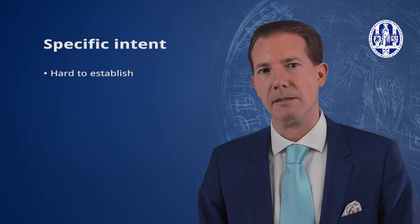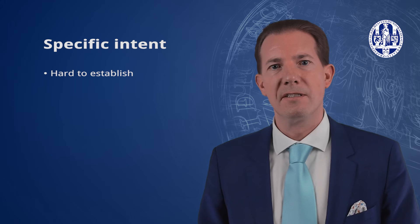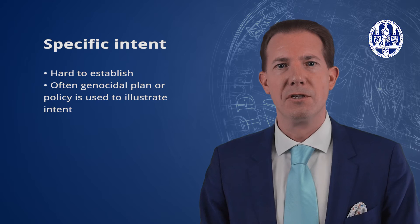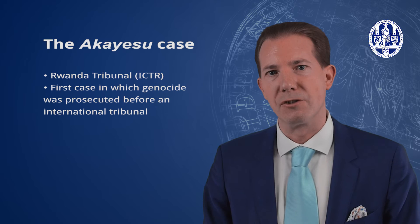The second and most difficult element of genocide is proving the intent of the perpetrator to destroy the group in whole or in part – referred to as specific intent. Intent is particularly hard to establish since it is difficult to look into the mind of the perpetrator. In the case of the Holocaust, intent could be shown by Nazi documentation, such as Mein Kampf. In modern contexts, a genocidal plan or policy is often used to illustrate intent. In Rwanda, the Hutu allegedly killed more than 75 percent of the Tutsi population. The Akayesu case before the Rwanda tribunal – the ICTR – was the first case in which genocide was prosecuted before an international tribunal.